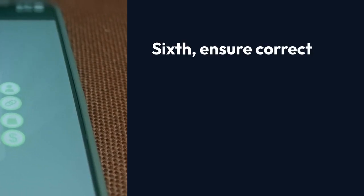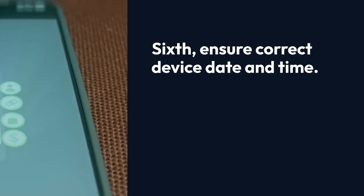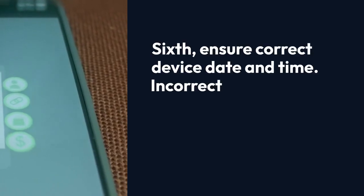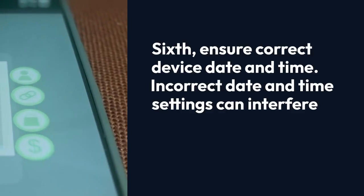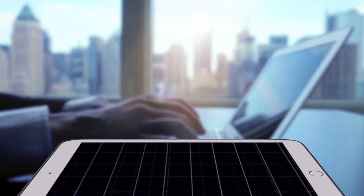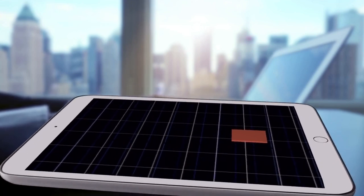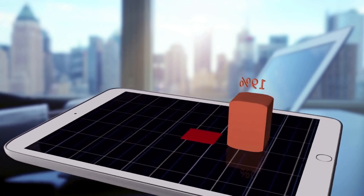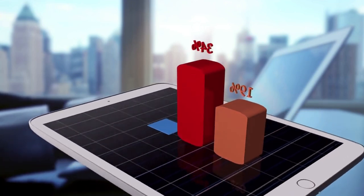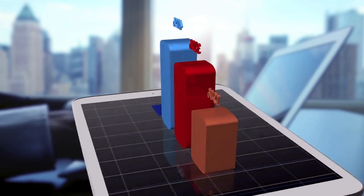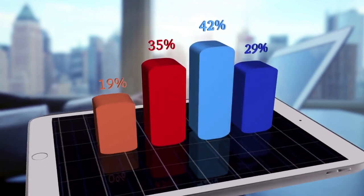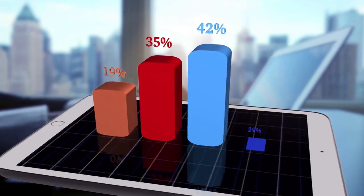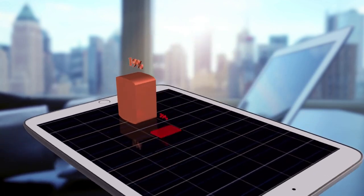Sixth, ensure correct device date and time. Incorrect date and time settings can interfere with streaming. Go to your device's settings and find the date and time section. Make sure the date, time, and time zone are correct, and enable the option to automatically update the date and time.